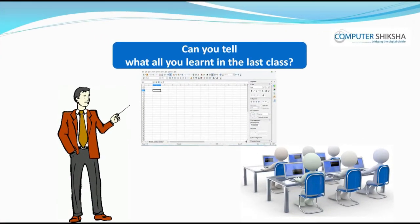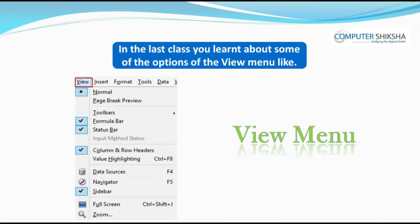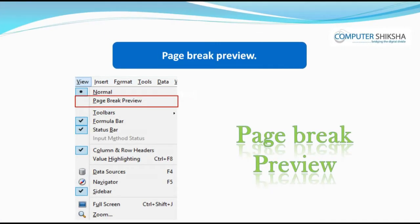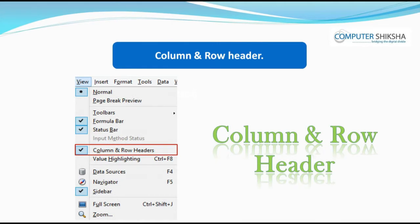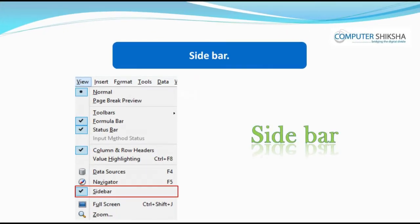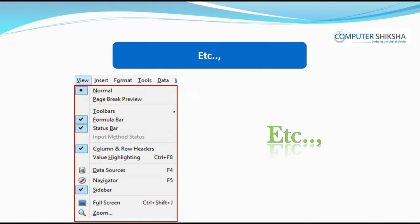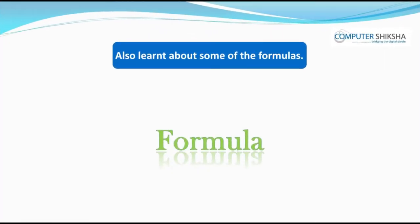Can you tell what all you learnt in the last class? In the last class, you learnt about some of the options of the View menu like Normal, Page Break Preview, Toolbar, Column and Row Header, Sidebar, etc. You had also learnt how you can hide or show these options and had also learnt about some of the formulas.